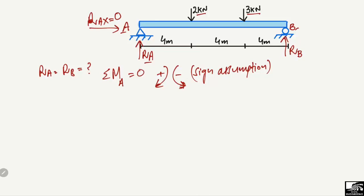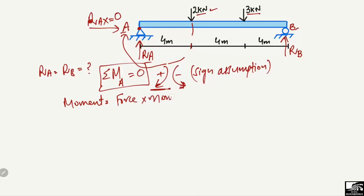Using summation of moments at point A equals zero: the 2 kN load creates a clockwise moment about A, so it is positive. Moment equals force multiplied by moment arm. The moment arm for the 2 kN load is 4 meters, so the term is 2 kN × 4 m.